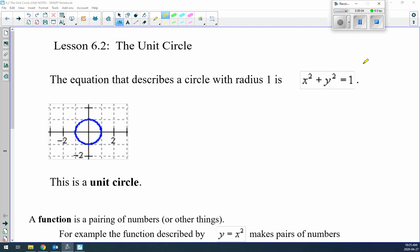Grade 12 pre-calculus, lesson 6.2, the unit circle. There's equations that describe circles with a radius of 1, and we break it down as x squared plus y squared equals 1. That's what it looks like on here. Basically 1, 1, 1, and 1 all the way around. This is a unit circle.